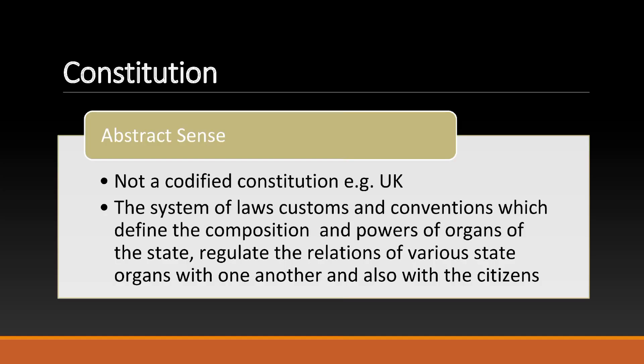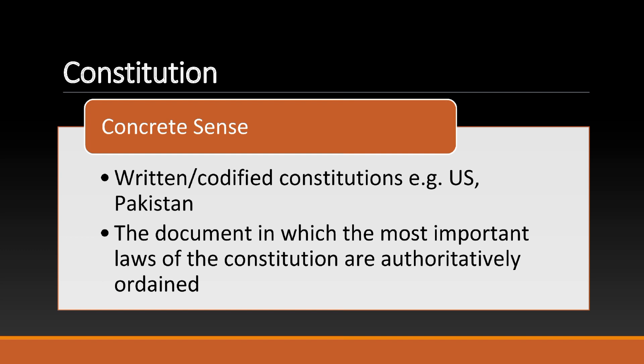In the abstract sense, where there is not a codified constitution — e.g., the UK — it refers to the system of laws, customs and conventions which define the composition and powers of organs of the state, and regulate the relations of various state organs with one another and also with the citizens. In the concrete sense, referring to written, codified constitutions — e.g., the US and Pakistan — it is the document in which the most important laws of the Constitution are authoritatively ordained.